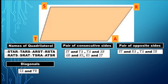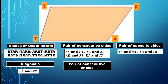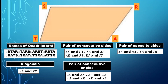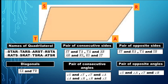These are the pairs of opposite sides. Now, for the pair of consecutive angles, we have angle S and angle T, angle T and angle A, angle A and angle R, and angle R and angle S. These are the pairs of consecutive angles. For opposite angles, angle S is opposite to angle A, and angle T is opposite to angle R. These are the basic parts of a quadrilateral.